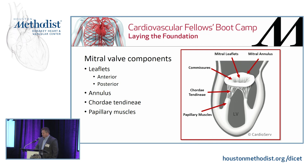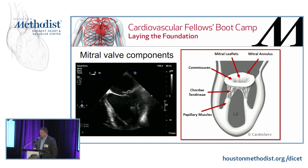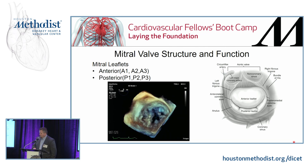The mitral valve is composed of four components: the anterior and posterior leaflets, the annulus — a dynamic structure — the chordae tendineae, and the papillary muscles. This mid-esophageal four-chamber view focuses on the mitral valve and shows abnormal coaptation. In this image, there is a flail segment of the posterior leaflet, but the key point is that normal coaptation of the leaflet tips prevents blood flow into the left atrium during systole.